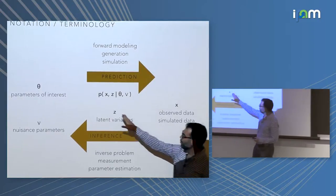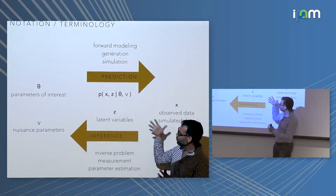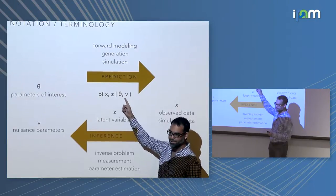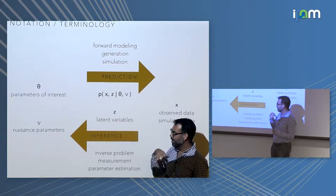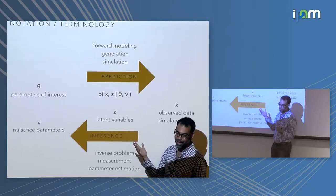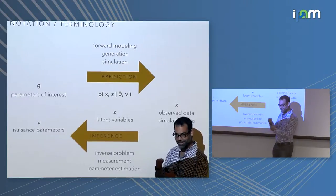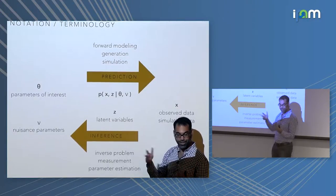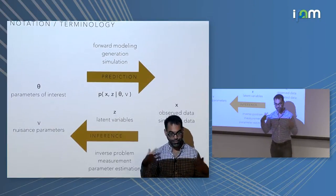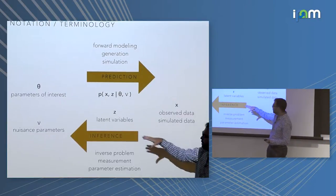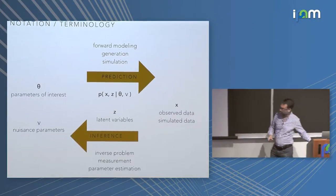The thing tying everything together is some statistical model that gives the probability of the data and latents given the parameters of interest and nuisance parameters. If you're super Bayesian, people will call all of these latents. As a scientist I like to separate them, because even if you're frequentist, the parameter of interest — like the mass of the Higgs boson — has a different nature. I don't know if the Higgs boson even exists before I found out. It's hard to come up with a prior on it. The latent variables, in a frequentist sense, have a real sampling distribution associated with them.